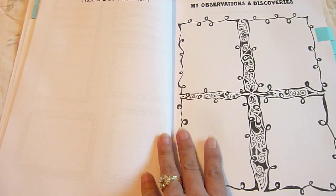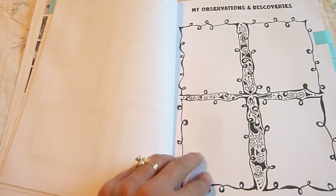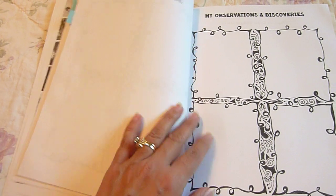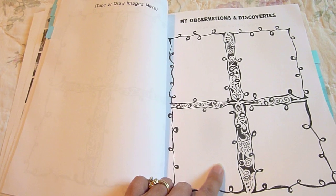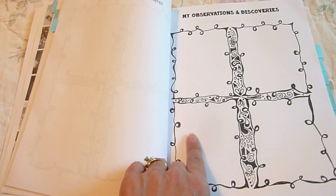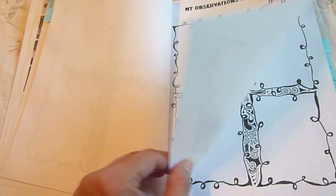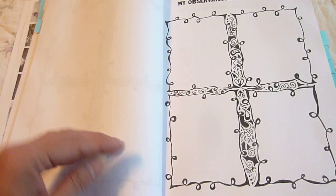And then the next one is My Observations and Discoveries. And on these pages, they will tape or draw images, and they can illustrate or write however they want to fill out these pages. And again, these ones repeat.